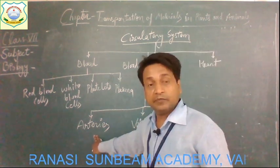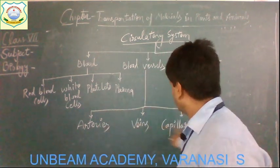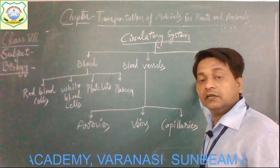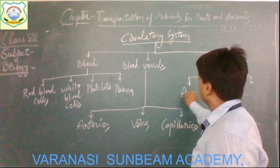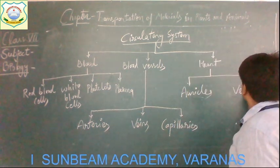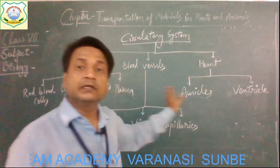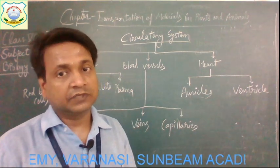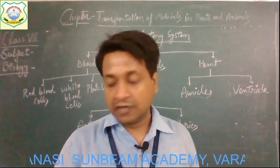Through arteries, mainly pure oxygenated blood flows. Through veins, deoxygenated blood flows, and capillaries are very fine blood vessels. The heart has two different parts: the first one is auricles and the second part is ventricles. This is the complete concept map of the chapter.